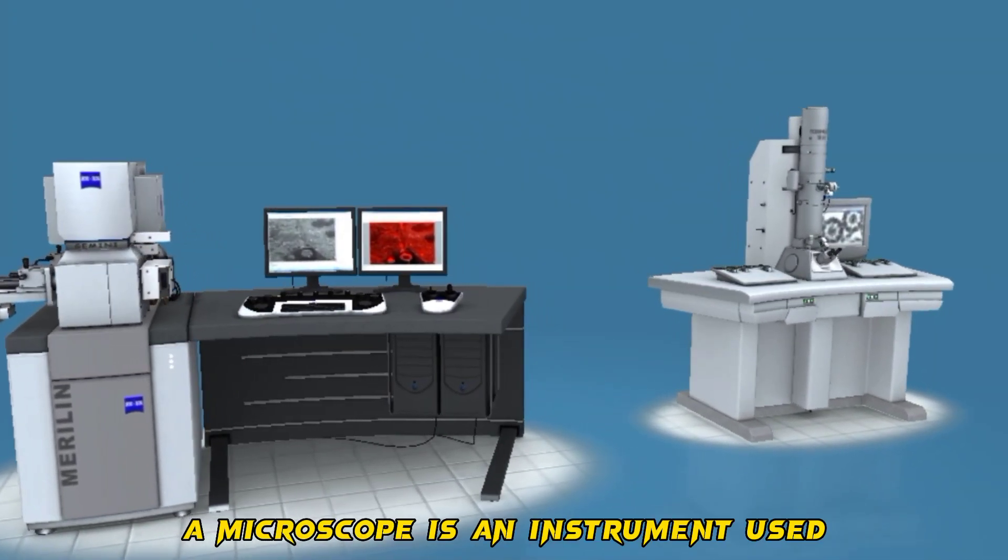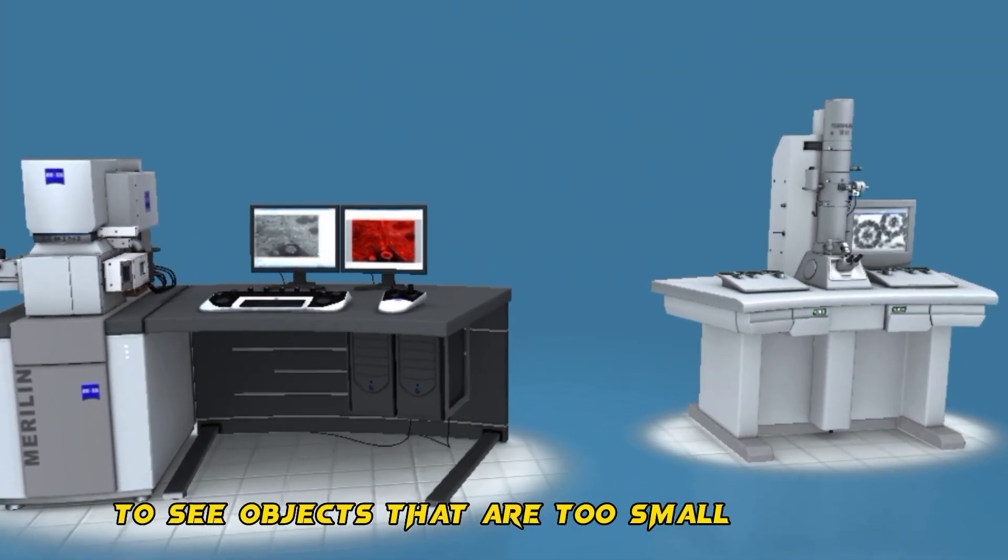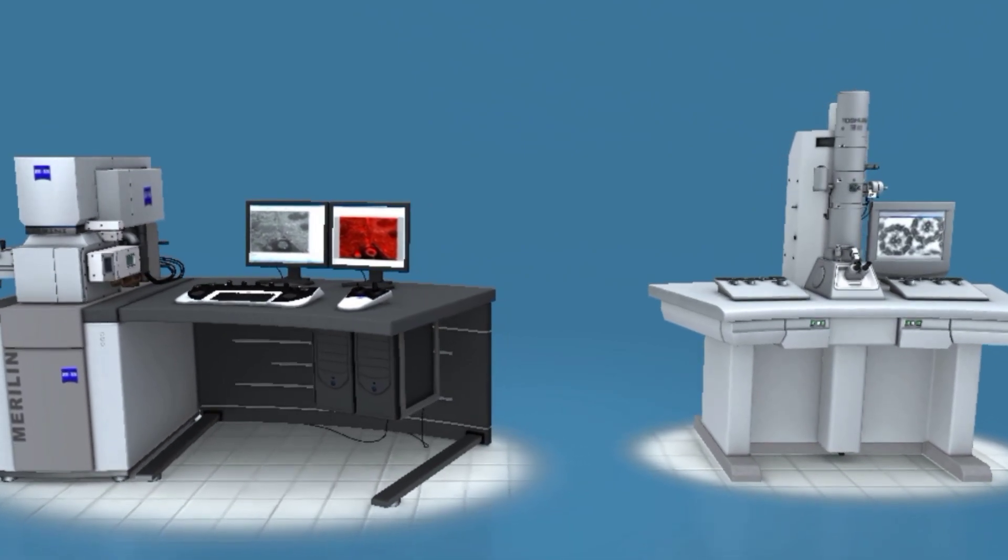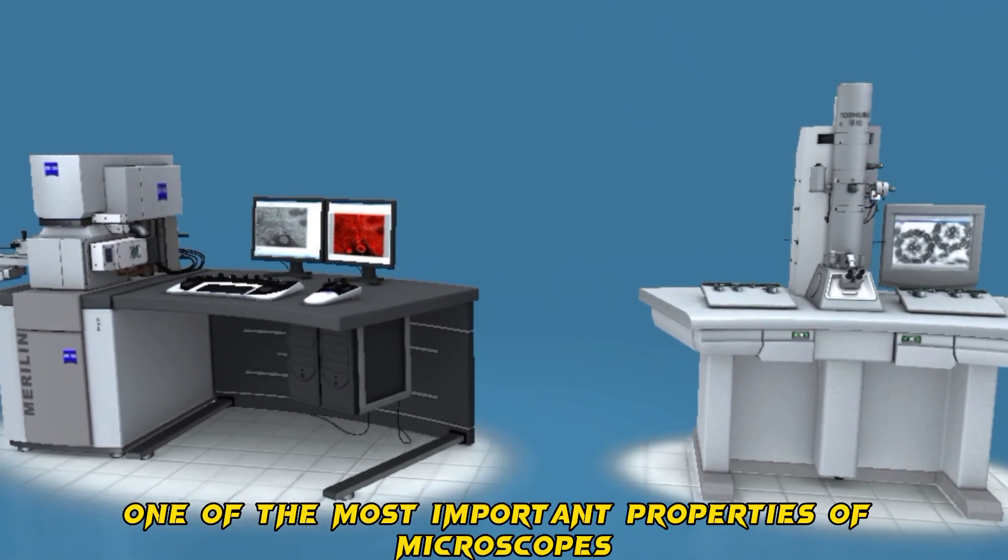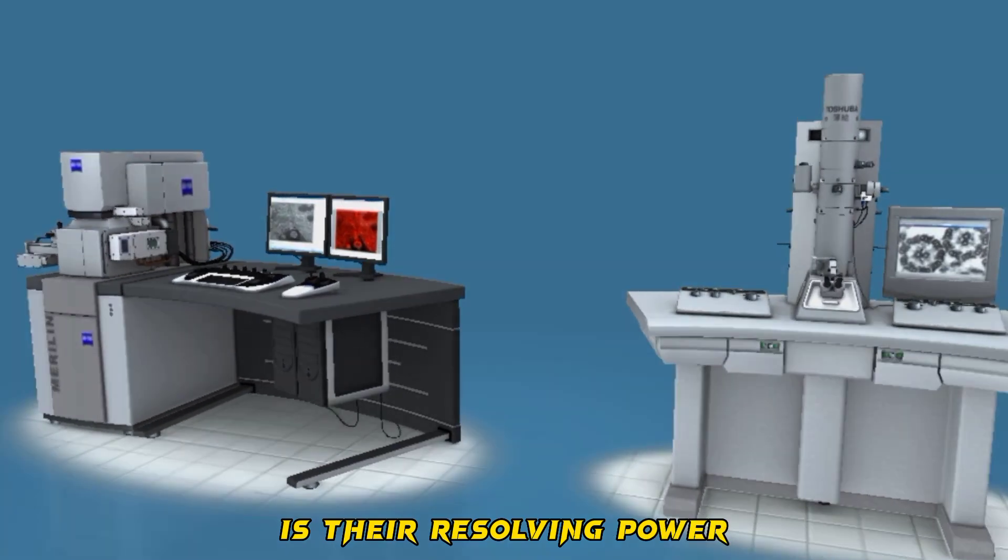A microscope is an instrument used to see objects that are too small for the naked eye. One of the most important properties of microscopes is their resolving power.